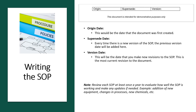Now the last section. Origin date — this would be the date that the document was first created; this date will never change when you make revisions to the SOP. Supersede date — every time there is a new version of the SOP, the previous version date will be added here; the date in the version date field will move to the supersede field. Version date — this will be the date that you make new revisions to the SOP.